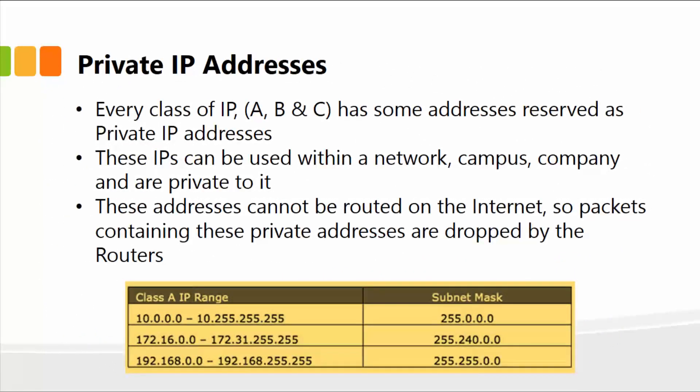Once we're done with subnetting and assigning IP addresses and subnet masks to various departments, just a brief note on what private IP addresses are. Keep in mind that every class of IP — whether class A, B, or C — has some addresses reserved as private IP addresses. These IPs can be used within a network, campus, organization, or company and are private to it. The public internet has nothing to do with these, so these addresses cannot be routed on the internet.